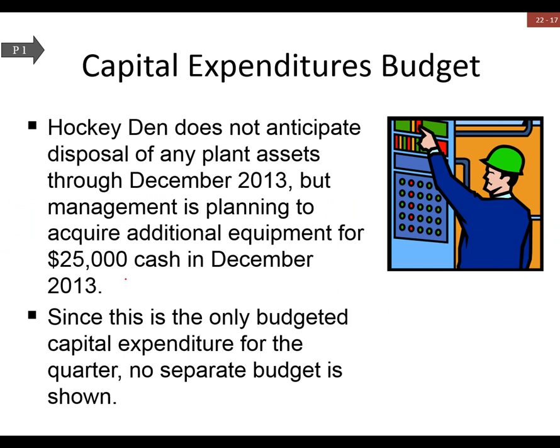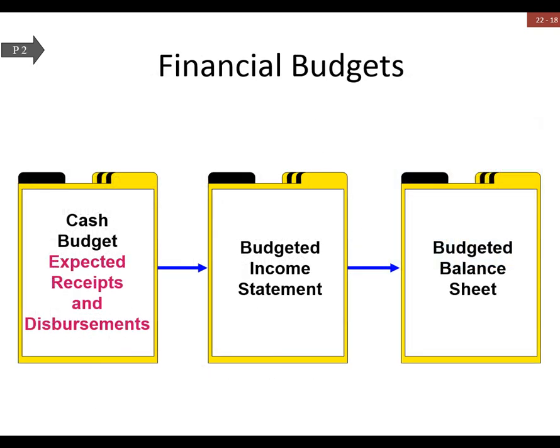Capital expenditures — we're not going to roll this out into a spreadsheet, but basically it's one expenditure that we're going to be making in cash. That'll be important at the end as we talk about rolling the budgets together. So that covers all of our operating and supporting budgets.